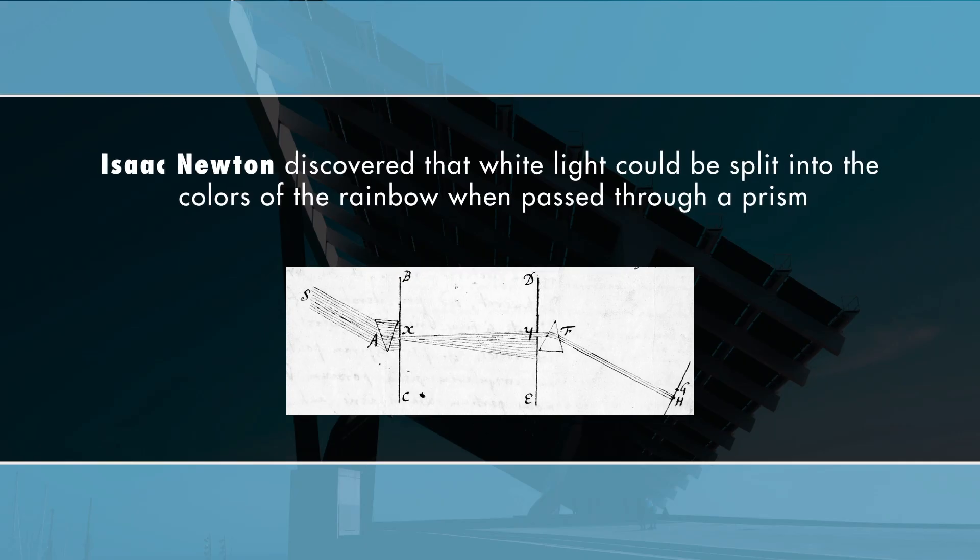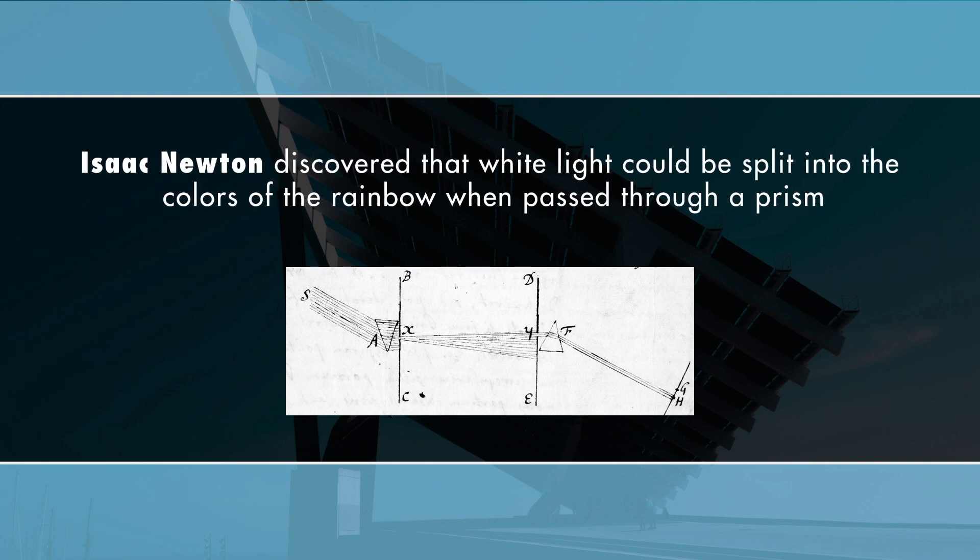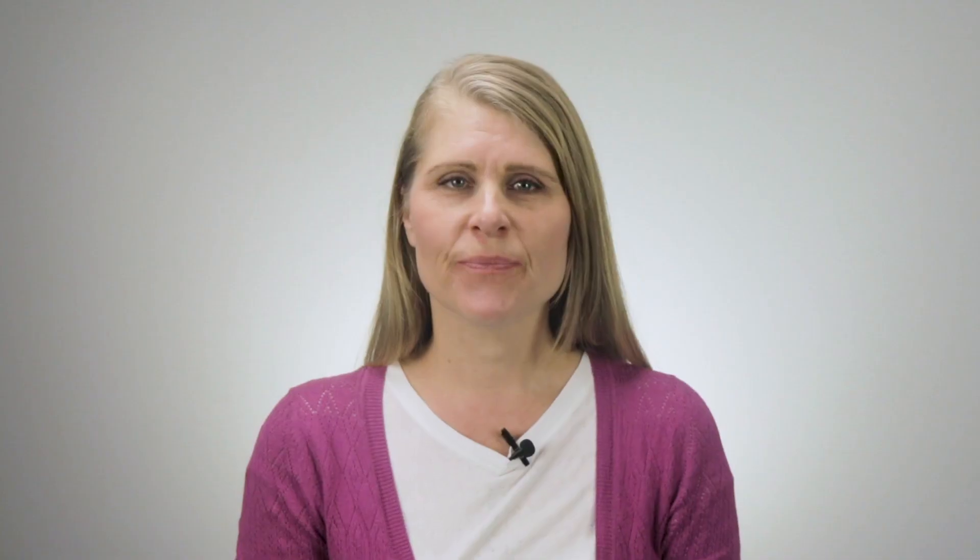History says that in 1665, Isaac Newton discovered that white light could be split into the colors of the rainbow when passed through a prism. In 1775, George Palmer proposed that there were three different receptors in the retina that could perceive hues of red, green, and blue. Then, in the early 19th century, Thomas Young elaborated on this concept by proposing a theory that light was composed of waves and that each color has its own wavelength.